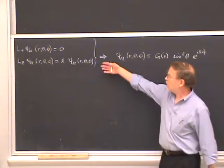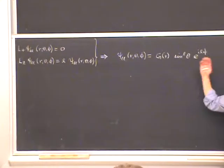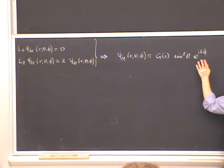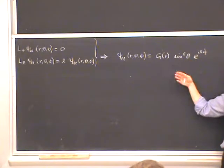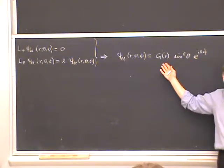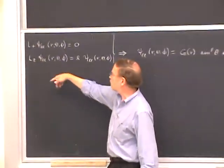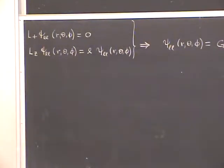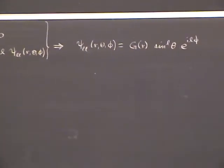We solved these two equations for psi_LL, the stretched wave function, and found it is an arbitrary function of the radius multiplied by sine^L(theta) times e^(iL*phi). The theta and phi dependence is determined, but not the radial dependence. This makes sense because the angular momentum operators don't involve any radial derivatives — they don't involve the radial coordinate at all. They're purely angular, so they determine the angular dependence but not the radial.